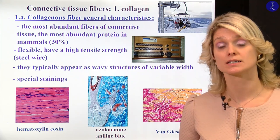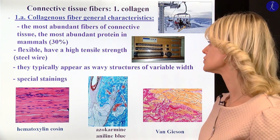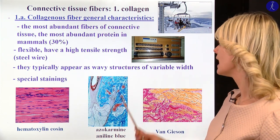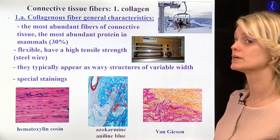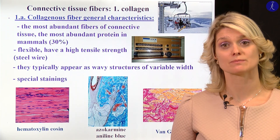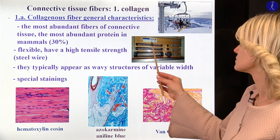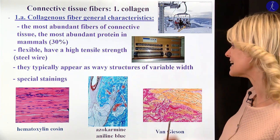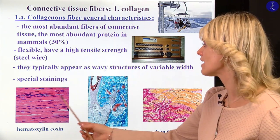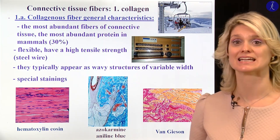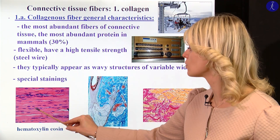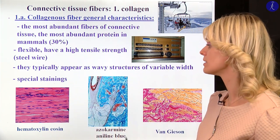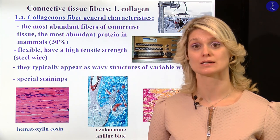Collagen fibers are flexible and have very high tensile strength. Here you can see a picture of a steel wire — the collagen fibers are very similar to these structures. It is really important to mention the special staining of the fibers. Here you can see the collagen fibers with hematoxylin and eosin staining. In this picture, you see that they have a little wavy appearance, but they could also be straight depending on the tissue.